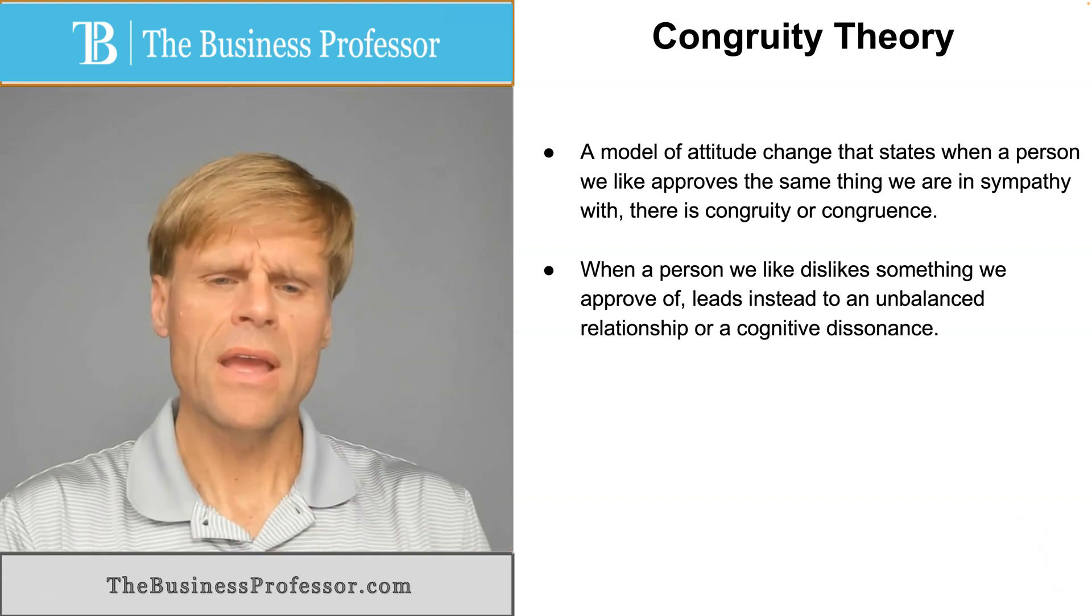So here are the parts to the theory. Generally, congruity theory is thought of as a formula. So you have three components: a source of information, that is somebody who's saying something; an object, and that's the concept or whatever you're saying; and then the perceiver, which is the person perceiving what you said.